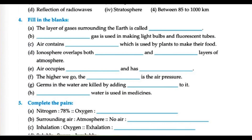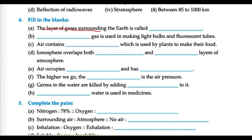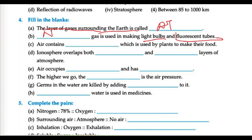Now fill in the blanks. The layer of air surrounding the Earth is called the atmosphere. The gas used for making bulbs and fluorescent tubes is neon.